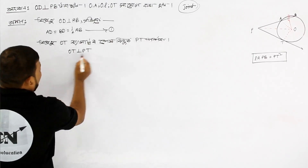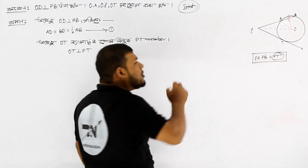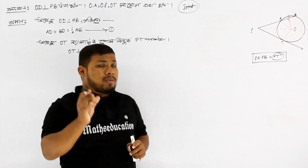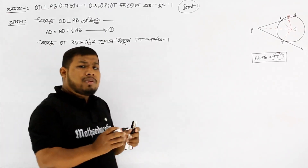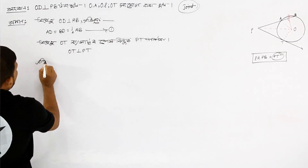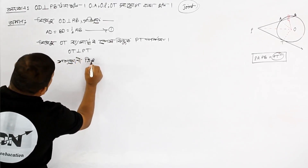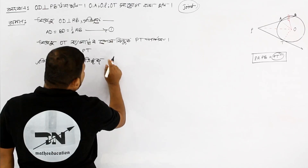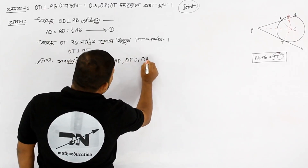This is a tangent at the end point of the radius. The right angle triangle part applies the Pythagoras theorem to this situation. O P D is equal to equation 1 and 2.